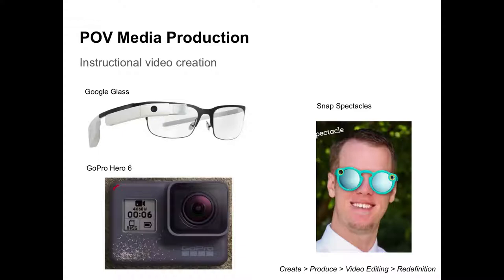Now we come to the Snap Spectacles, which are like a spin-off on Google Glass except without a heads-up display. You're looking through typical sunglasses but there is a camera on the right side that does HD quality video as well as really good audio. It transfers information to the Snapchat app on your phone. The maximum length of a video on Snapchat is 10 seconds — you hit a button on one of the arms and that begins the 10-second countdown of video capture.